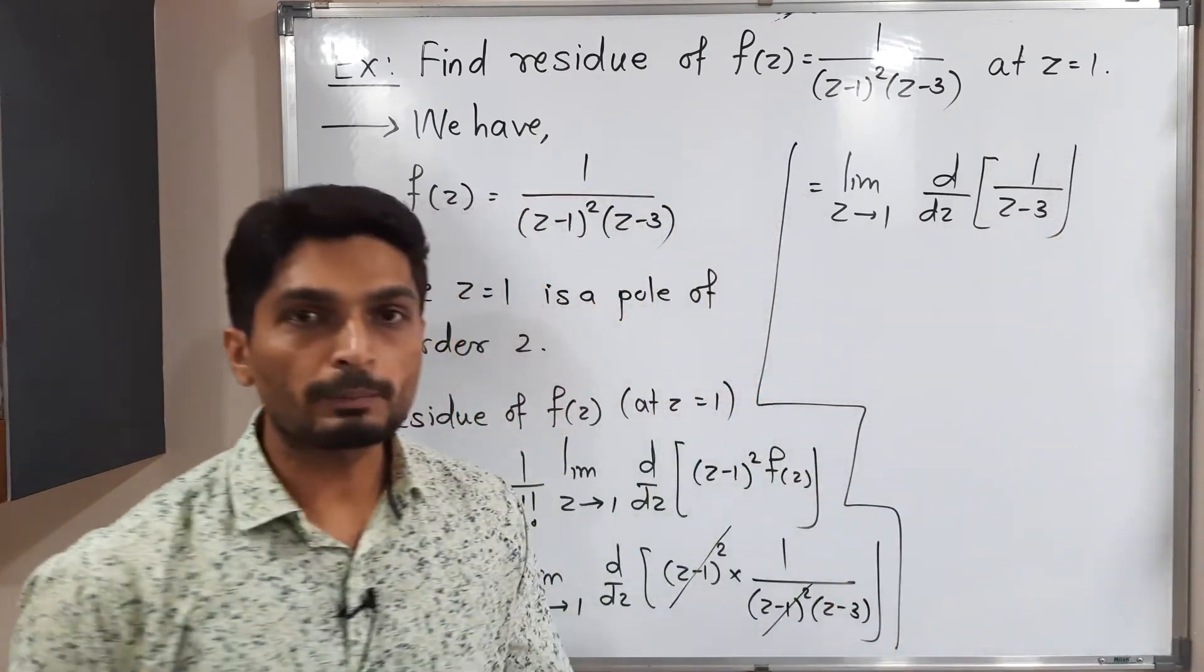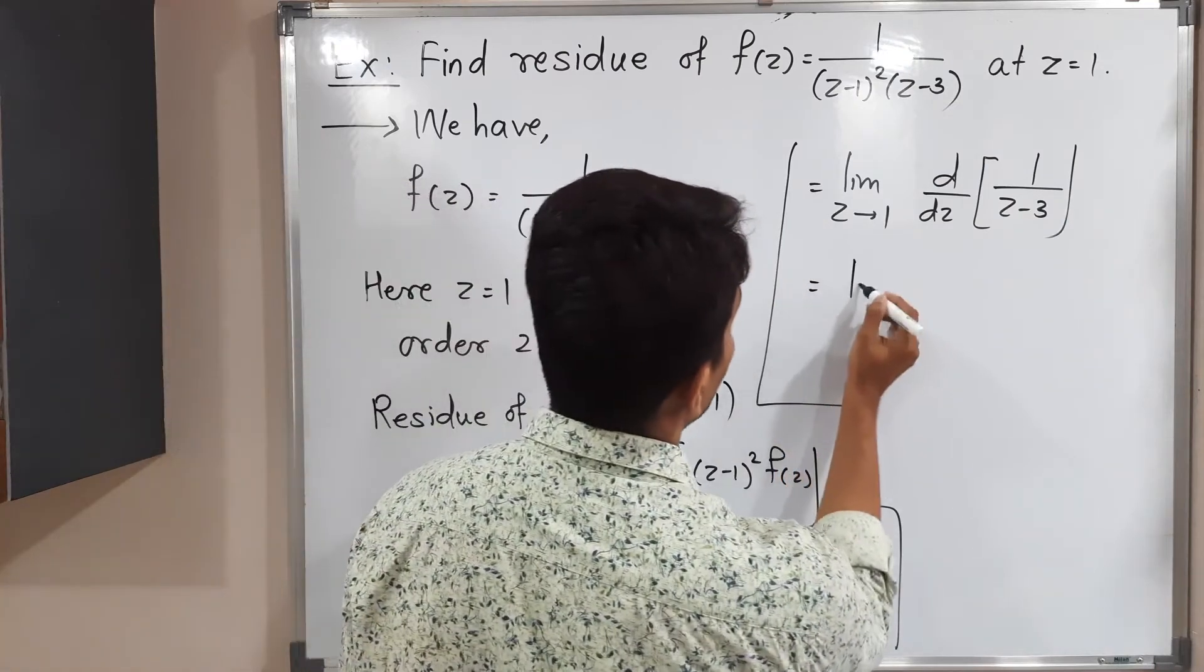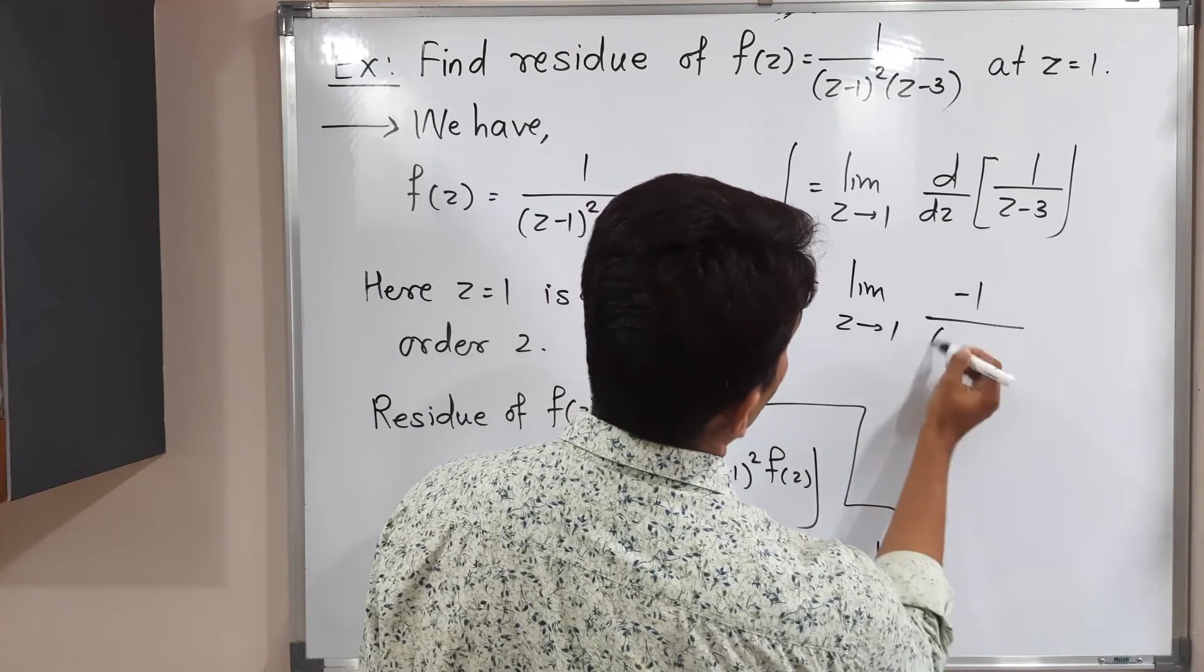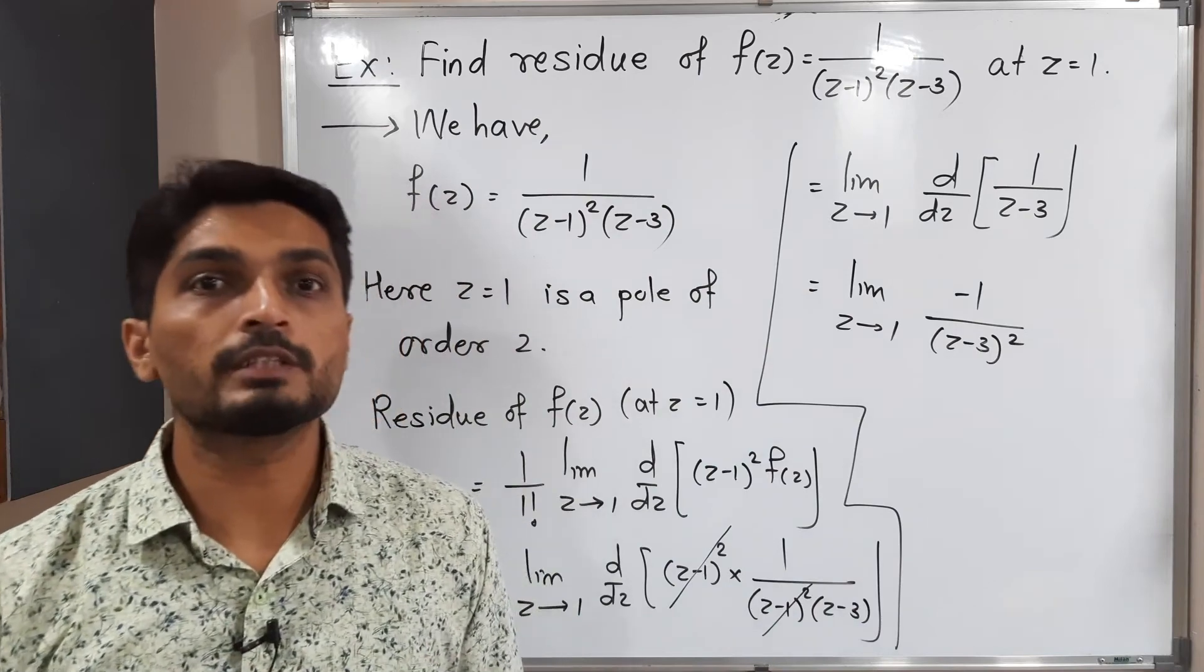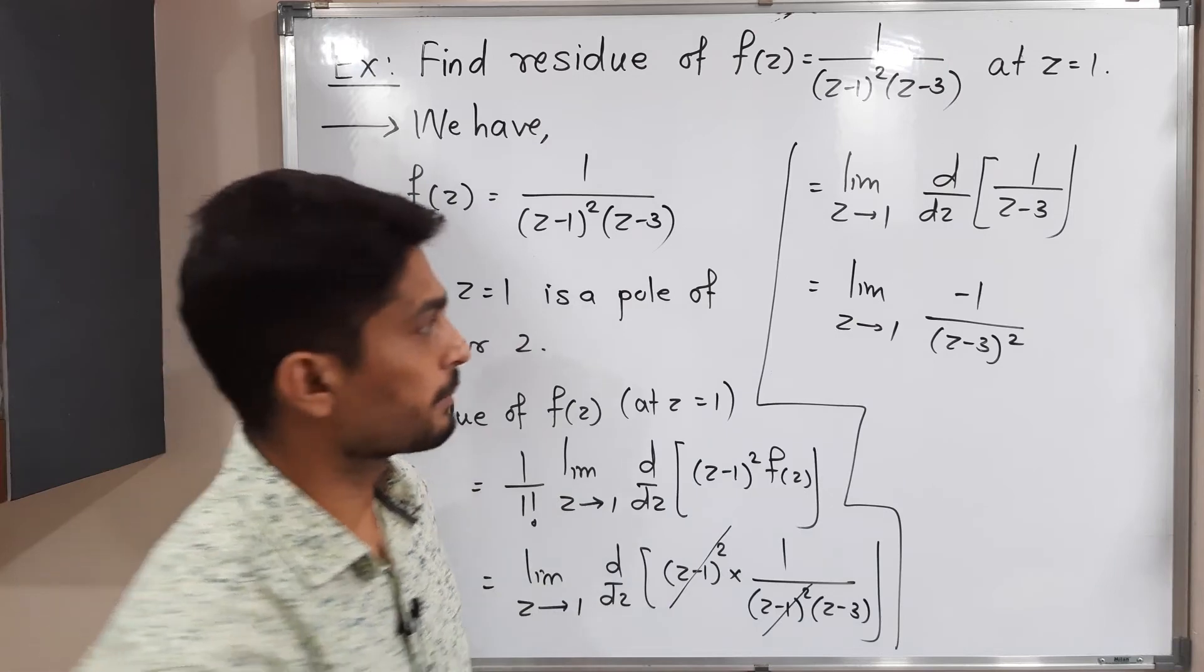We know that derivative of 1 by z is minus 1 upon z squared. Let us use the formula. This is equal to limit z tends to 1, minus 1 upon (z minus 3) squared. And again derivative of this bracket. But fortunately derivative of this bracket is 1 only, so I will skip that step.